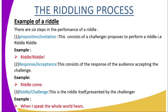In the riddling process, there are six steps involved. The first step begins with the challenger introducing the riddle. The challenger is not yet stating the riddle itself, but is calling out a proposal to the audience. For example, the challenger will say: 'Riddle riddle.'